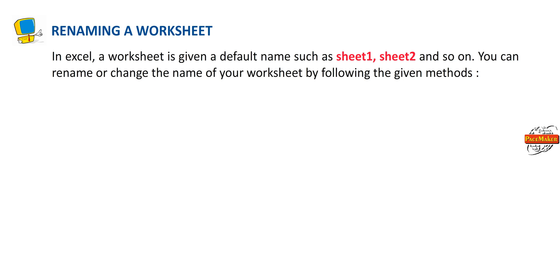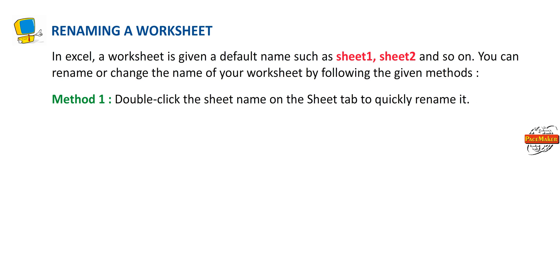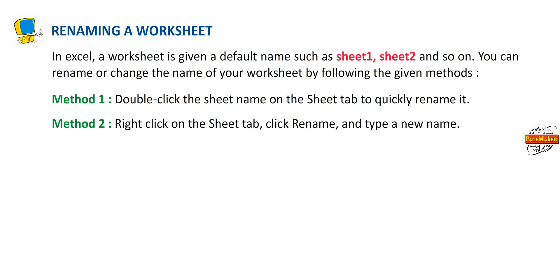Renaming a worksheet: In Excel, a worksheet is given a default name such as Sheet 1, Sheet 2, and so on. You can rename your worksheet using two methods. Method 1: Double-click the sheet name on the Sheet tab to quickly rename it. Method 2: Right-click on the Sheet tab, click Rename, and type a new name.